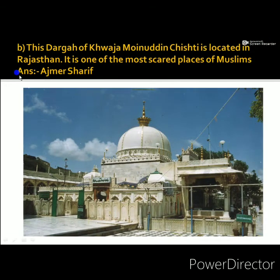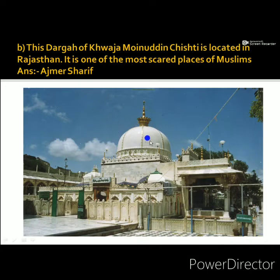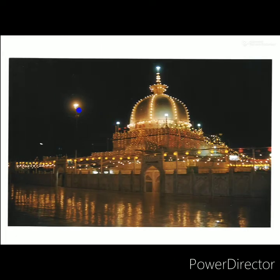The second question: this is the dargah of Khwaja Moinuddin Chishti, located in Rajasthan. It is one of the most sacred places for Muslims. The dargah shown here is Ajmer Sharif, located in Rajasthan. It is a very beautiful example of Mughal architecture and is a shrine and prayer place for Sufi Muslims. See the picture of Ajmer Sharif — how beautiful it looks, especially when illuminated at night.